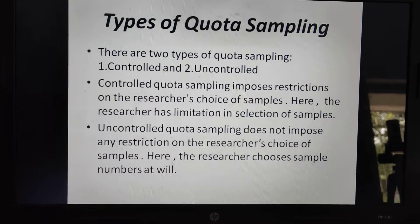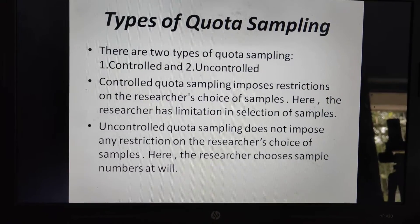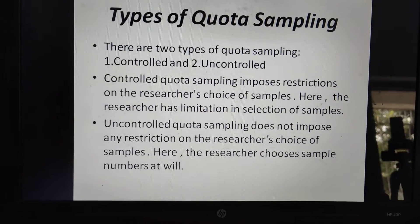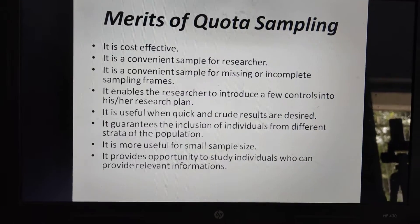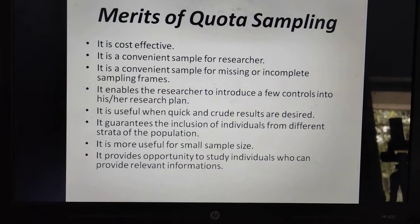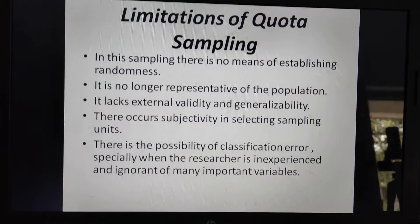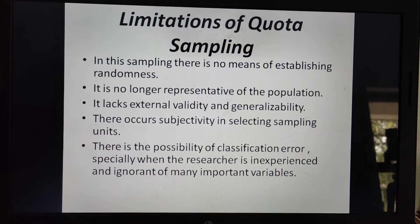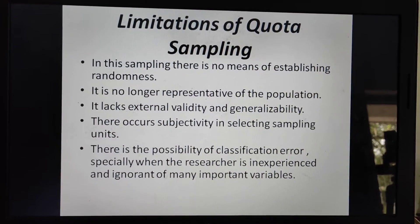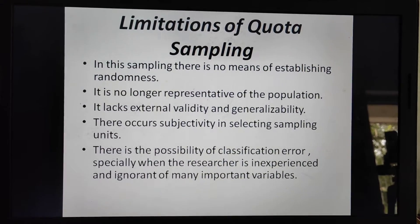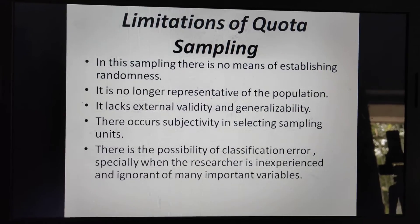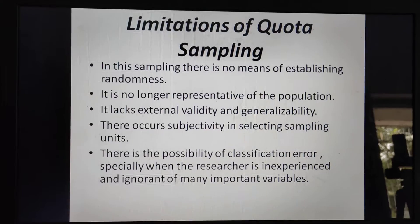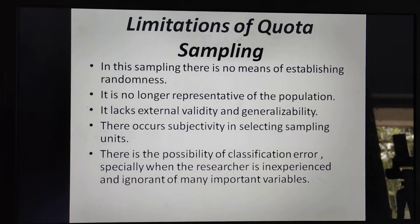There are two types of quota sampling: controlled and uncontrolled. Then we will cover its merits, and finally its limitations. This is also a brief lecture, and quota sampling is also a type of non-probability sampling technique.